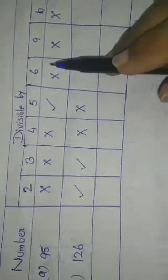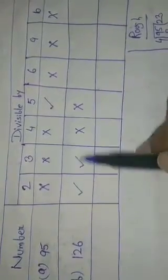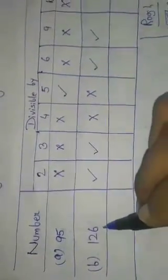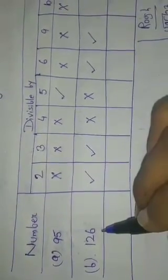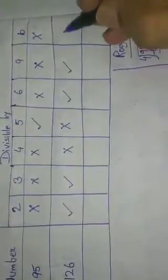Divisibility by 6: the rule is if any number is divisible by both 2 and 3, it is divisible by 6. Here 126 is divisible by both 2 and 3, so it is also divisible by 6. Now, divisibility by 9: find the sum of the digits — 1 + 2 + 6 = 9. Since 9 is divisible by 9 (1 × 9), 126 is also divisible by 9. Then, divisibility by 10: the ones digit is 6, not 0, so 126 is not divisible by 10 — put a cross.